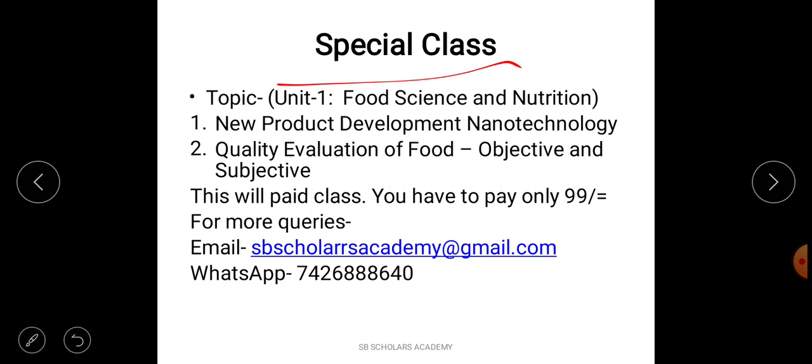We have received number of queries for these two topics. Unit 1 is Food Science and Nutrition. There are two topics. The first one is new product development nanotechnology, and the second one is quality evaluation of food, objective and subjective methods. These two topics will be studied in a special class.